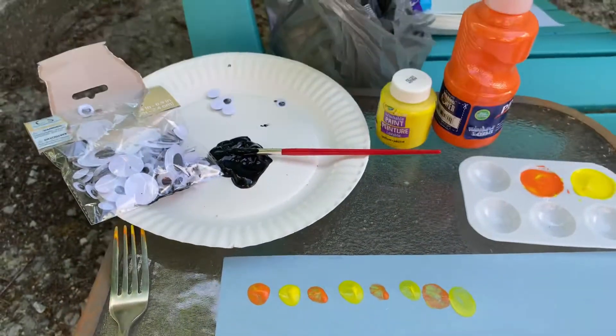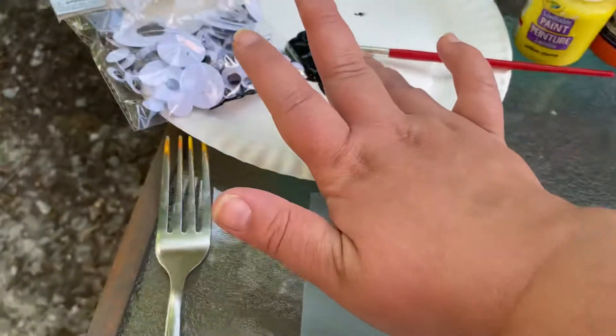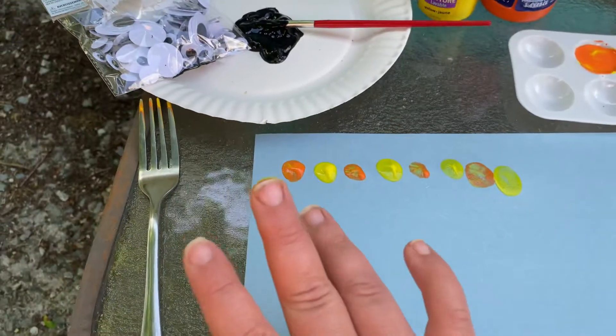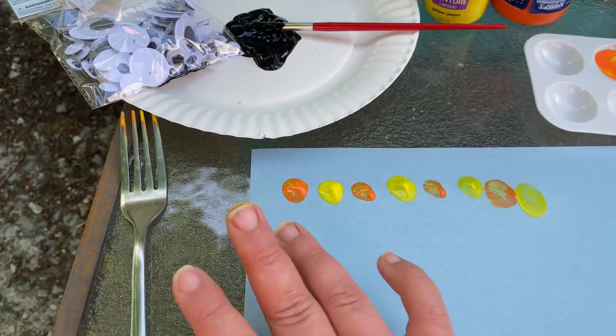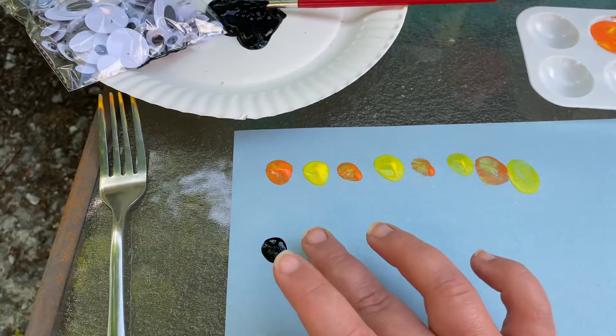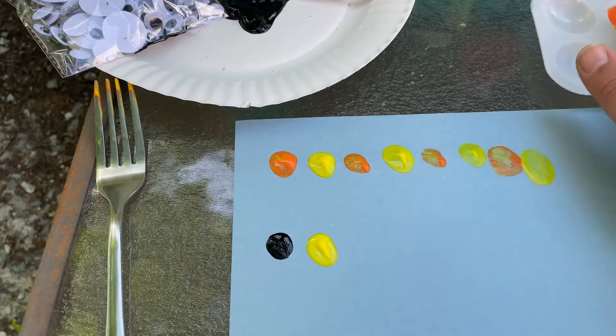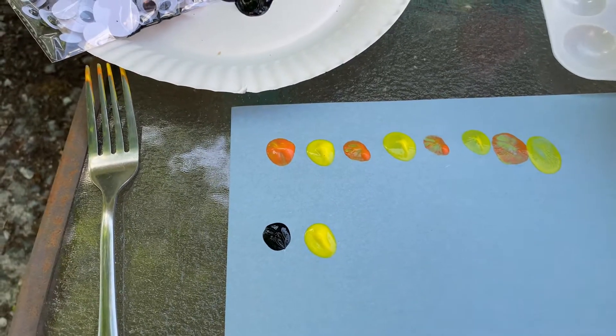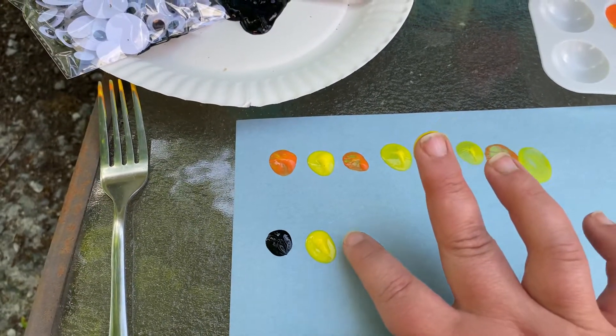So I'm going to make another pattern. I think I'm going to use this black and I'm going to put it here. Black. Then I'm going to use some more yellow. Yellow. Then I'm going to use some orange. Orange.